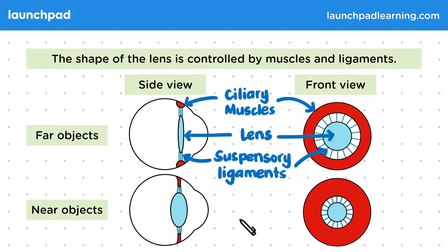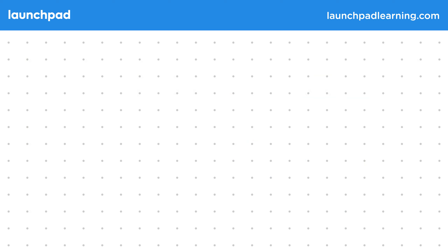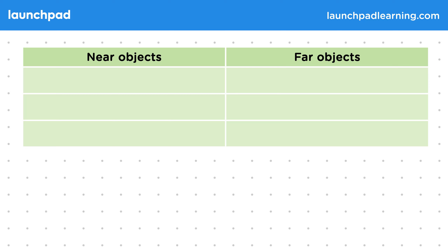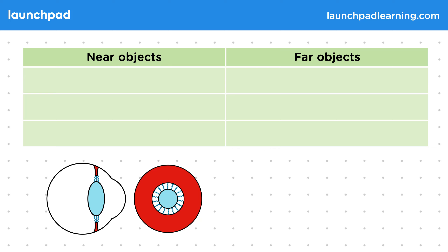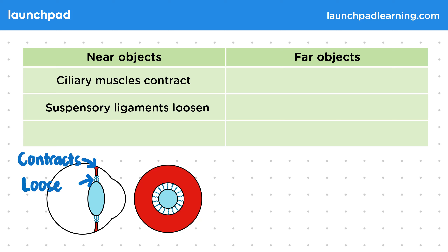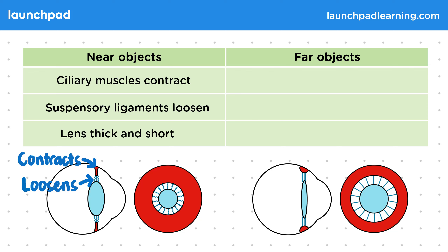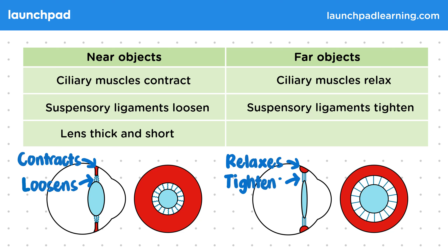So how can we summarise all of this information into a table? For near objects: the ciliary muscles contract, the suspensory ligaments loosen, and the lens is thick and short. For far objects: the ciliary muscles relax, the suspensory ligaments tighten, and the lens ends up being thin and long. Make sure you're using the correct vocabulary — ligaments tighten, not contract, and muscles relax, not loosen.